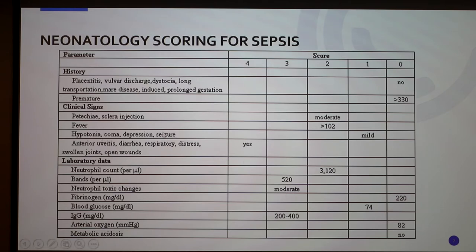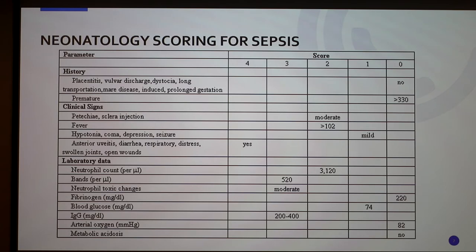Anterior uveitis is redness of the eye because it's an infection of the middle part of the animal's eye. All of these can be scored based on how bad they are. When you add all of this up, if there's a score of 12 or higher, they are considered septic. However, if you're not able to get all of the laboratory data from the blood — either because they're so septic or you lack the ability — then a score between 10 and 11 is also considered septic.